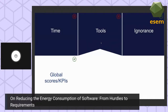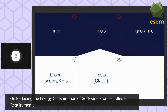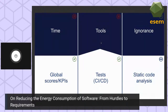Regarding tool specifications developers would like, there was consensus on having global scores and KPIs to monitor the global energy footprint of software during development, with graphical output and simplicity. Integration with existing CI/CD platforms — like git — is important so developers don't have to change their habits. Some developers also mentioned static code analysis, though moderately, as it can identify bad practices but doesn't account for the execution environment.